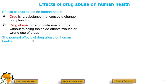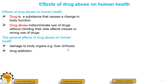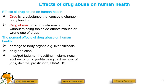The effects of drug abuse on human health include damage to body organs, like the liver being damaged causing liver cirrhosis. There is also drug addiction — not being able to do without drugs — and poor judgment resulting in clumsiness. Socioeconomic problems such as crime, loss of jobs, breaking of families, and prostitution may occur, which can lead to acquiring HIV and AIDS. There is also poor appetite, and when the liver is damaged there is no proper digestion of food.